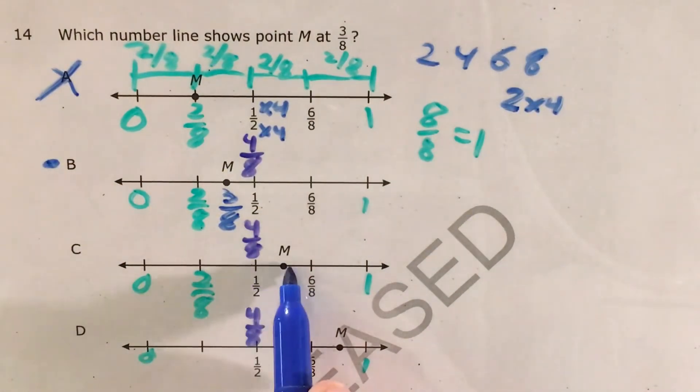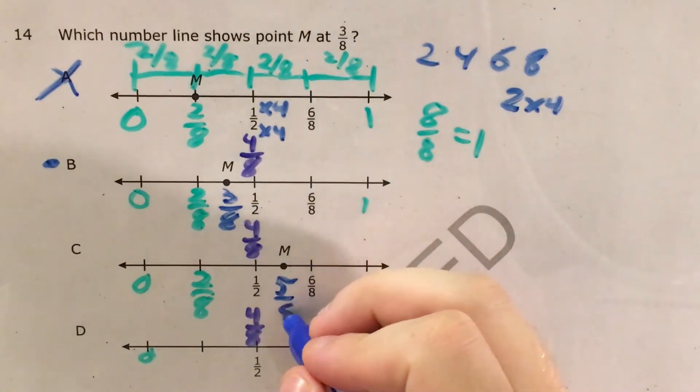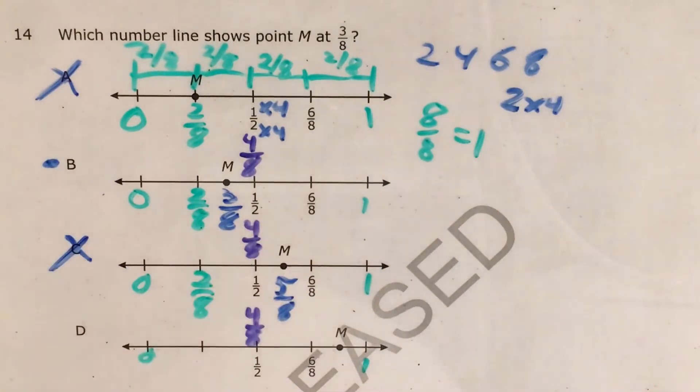For choice C, M is right between four and six. The number right between four and six is five, so this would be five-eighths. Definitely not what we're looking for.